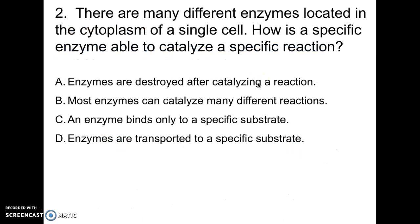Here's another question: There are many different enzymes located in the cytoplasm of a single cell. How is a specific enzyme able to catalyze a specific reaction? The best answer is answer choice C — an enzyme binds only to a specific substrate — and that goes back to the key and lock model. Enzymes are specific to one type of substrate.